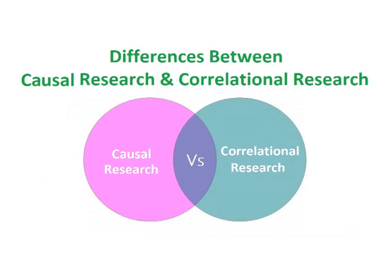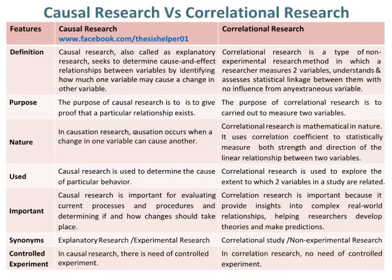Differences between causal research and correlational research. Causal research, also called explanatory research, seeks to determine cause and effect relationships between variables by identifying how much one variable may cause a change in another variable. Whereas correlational research is a type of non-experimental research method in which a researcher measures two variables and assesses the statistical linkage between them with no influence from any extraneous variable.